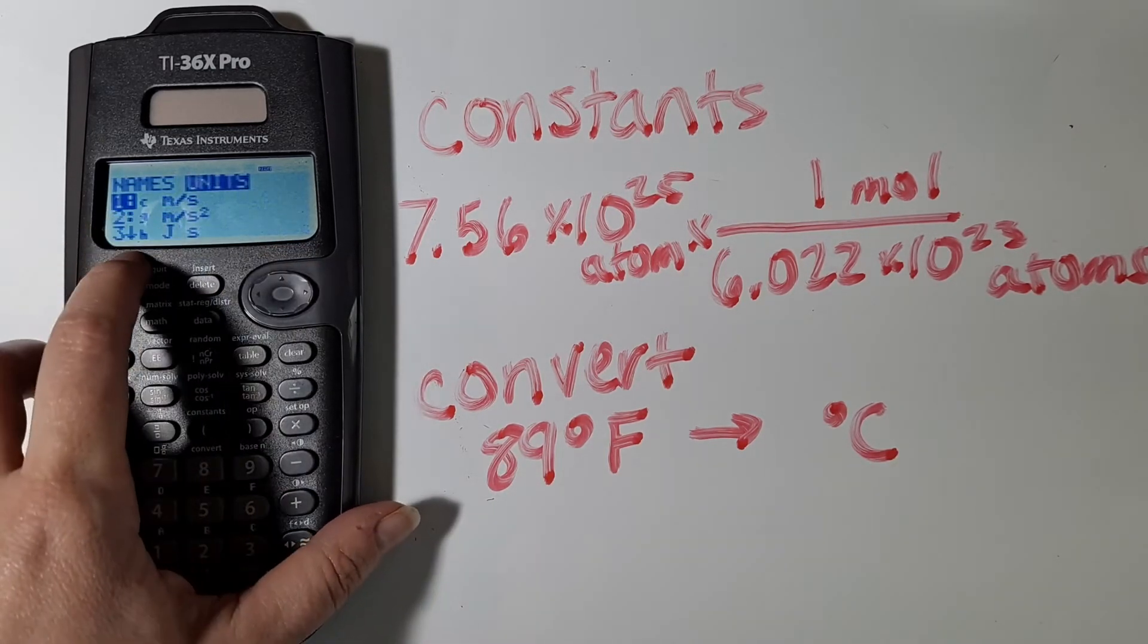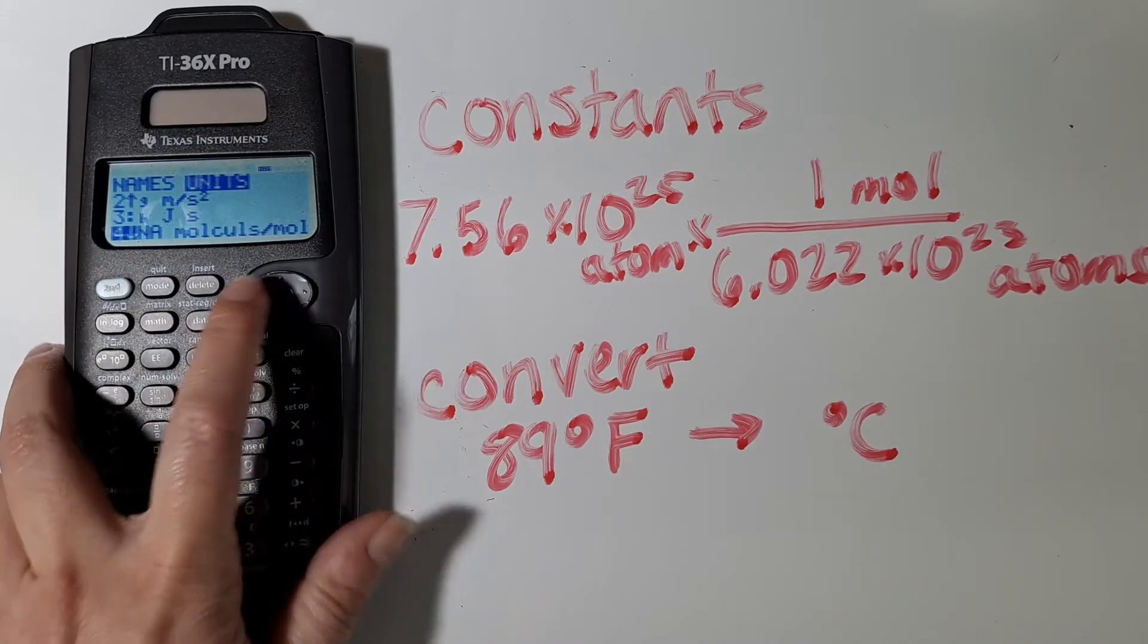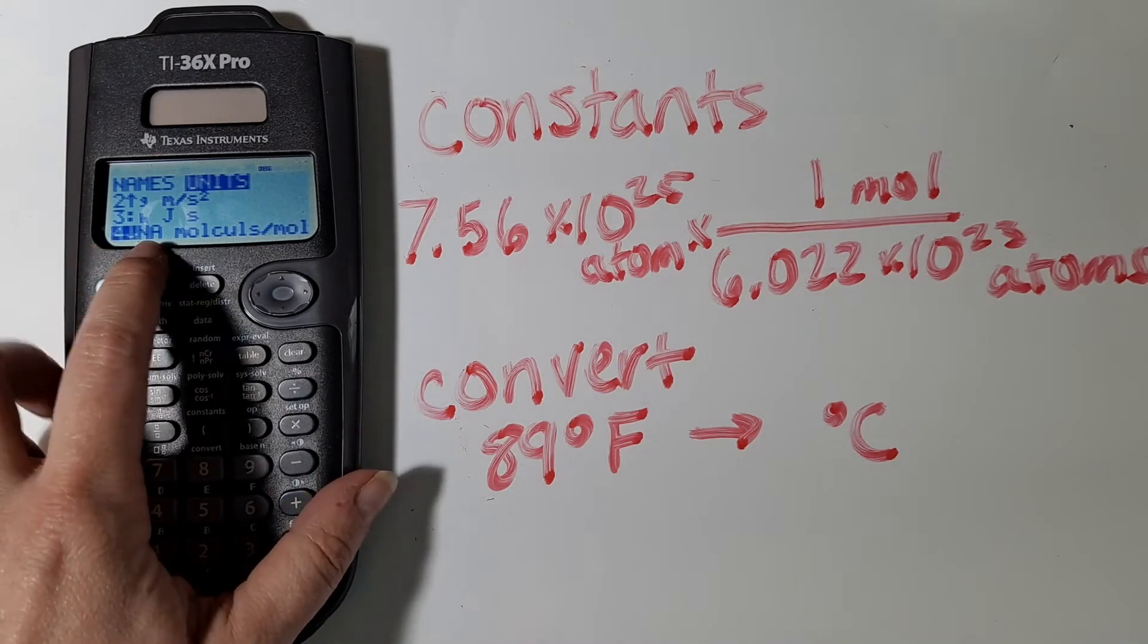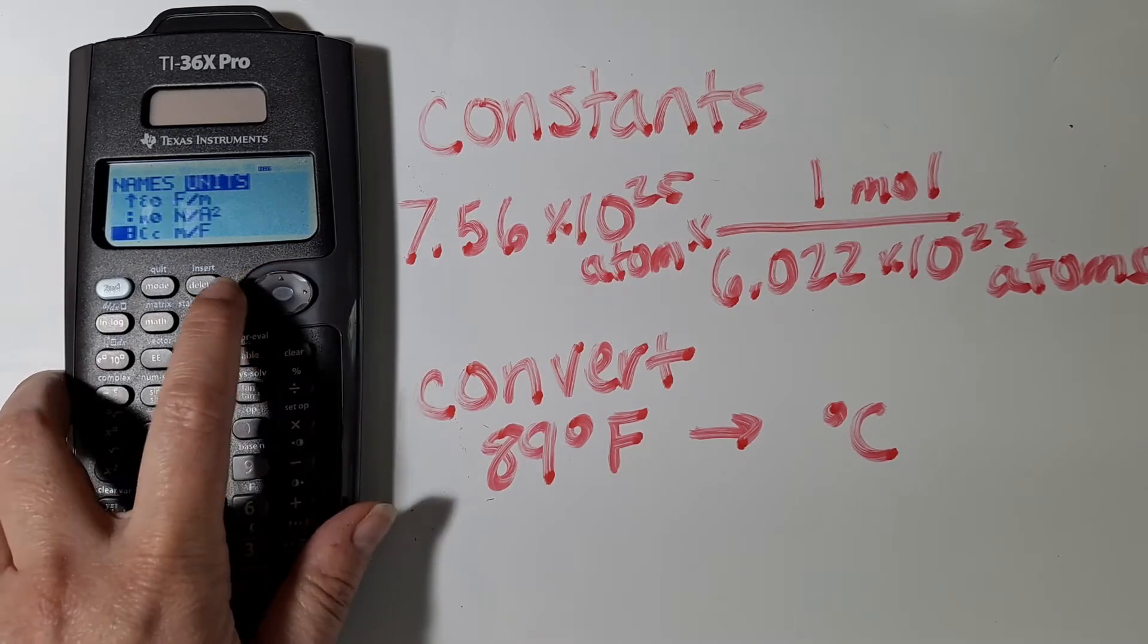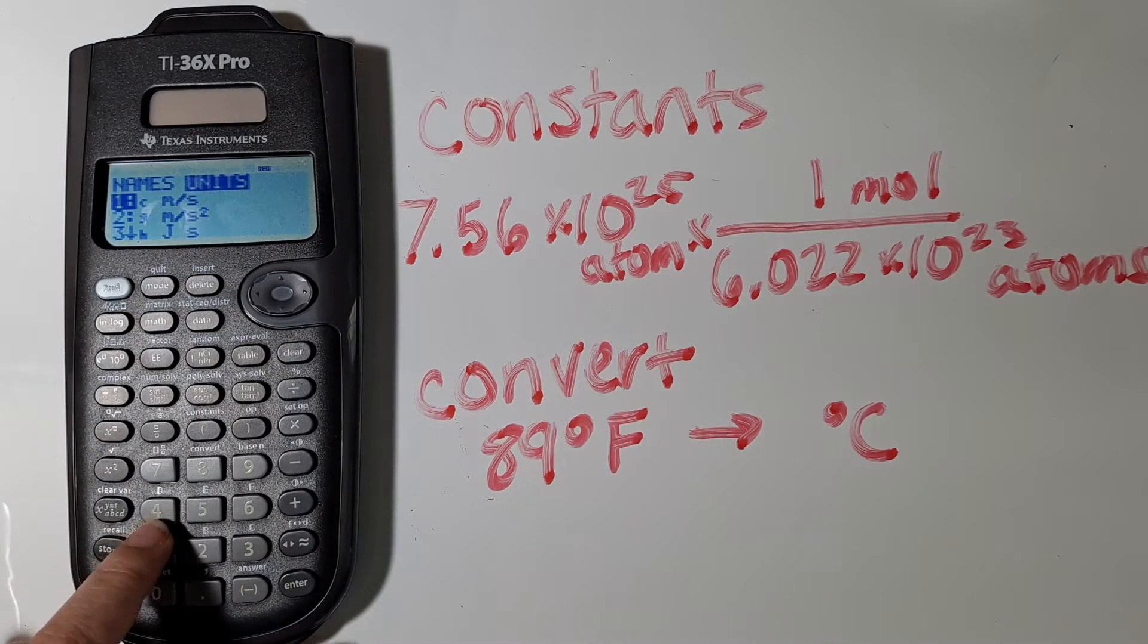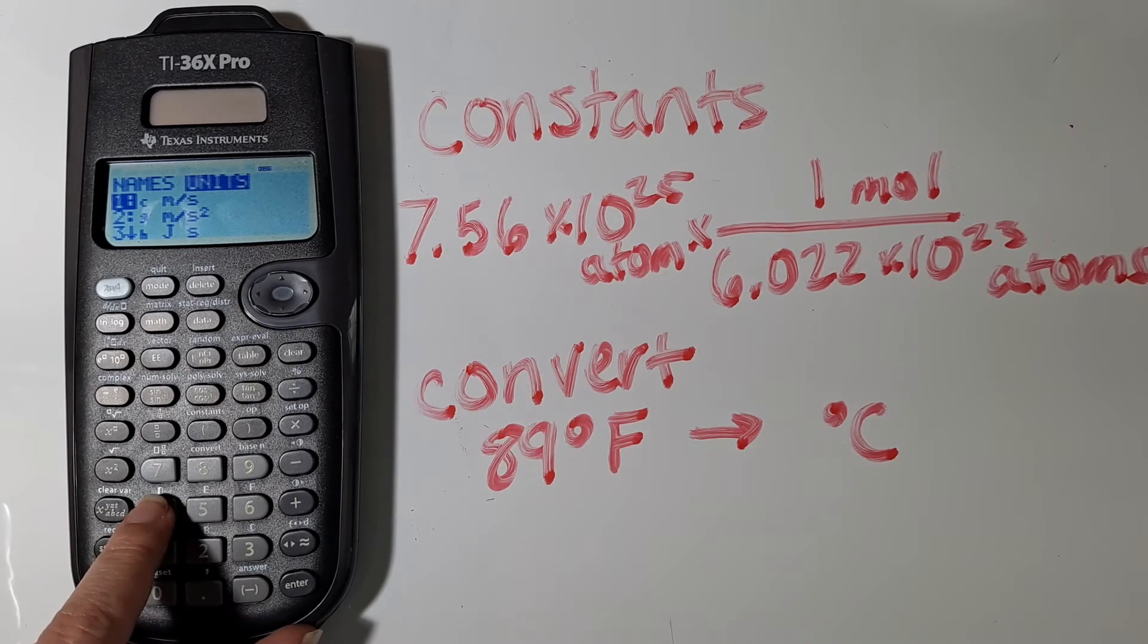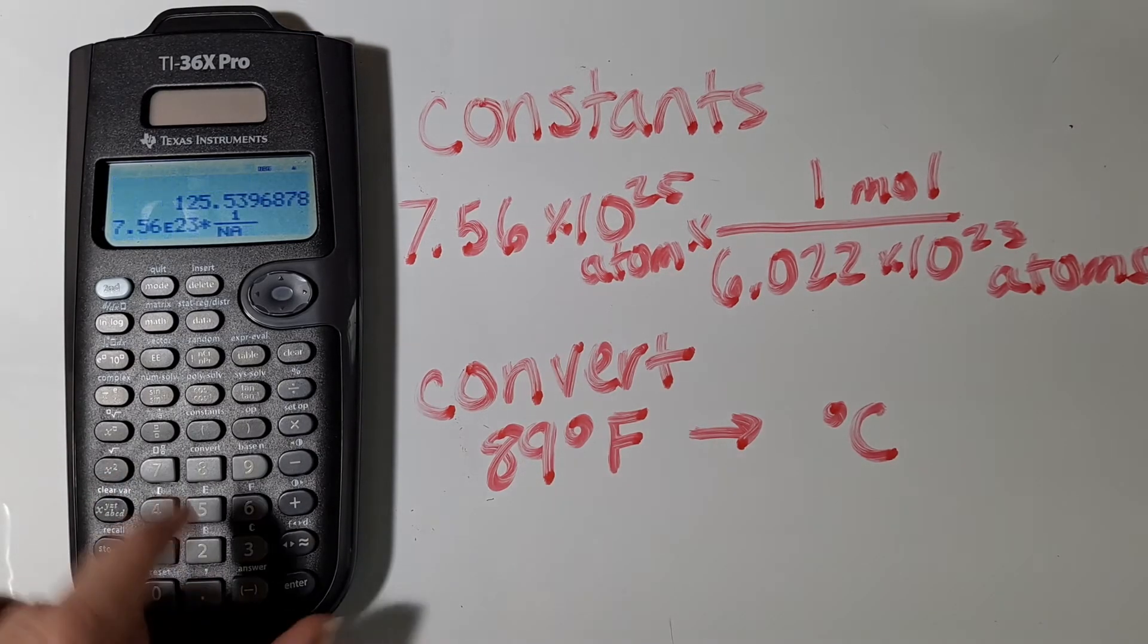No matter which menu we choose from, we have two options to pull up our constant. The first option is to hit enter once we have that selected. Another option is that if we know which number corresponds to what we want, we can just hit the number value associated with that constant. So I know Avogadro's number is in number 4, and so I'm going to hit number 4.